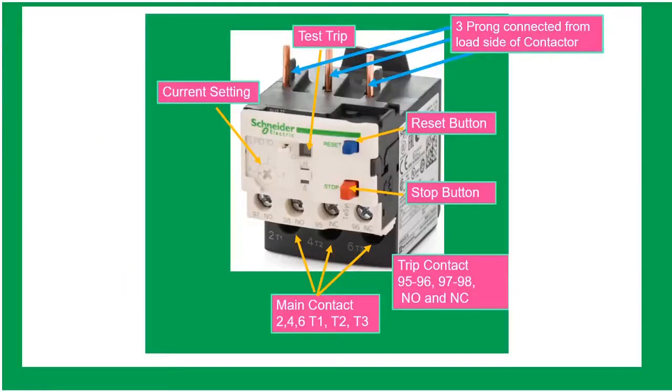The overload relay is always part of magnetic contactor and is designed to protect the motor against prolonged overcurrent. This means if the motor is running for too long with high current, it will overheat and destroy the motor. One of the causes for this is bad bearing.